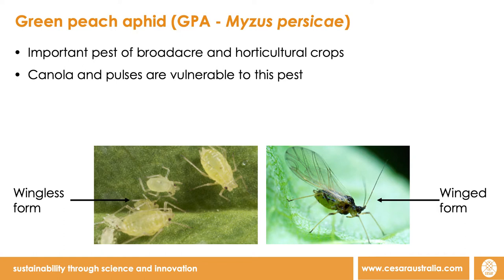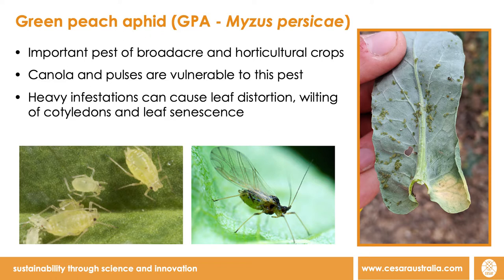The green peach aphid, or GPA for short, is a pest of a wide variety of broadacre, broadleaf pastures and horticultural crops. During heavy infestations, direct feeding damage from the green peach aphid can cause leaf distortion, wilting of the cotyledons, leaf senescence and seedling death.